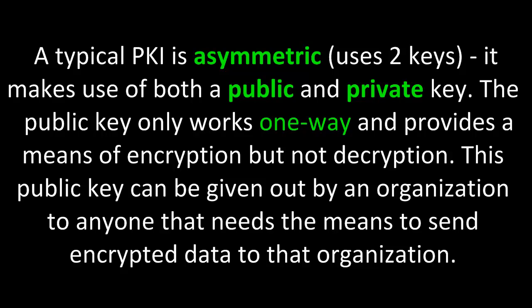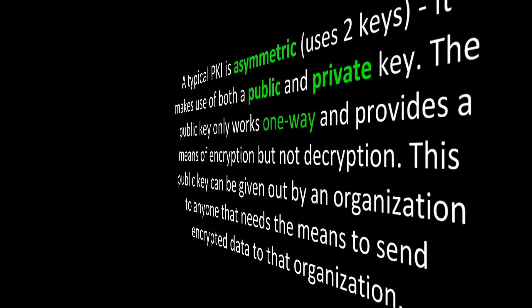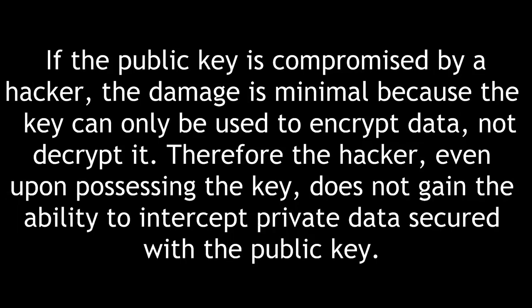A typical PKI is asymmetric — that is, it uses two keys: both a public and private key. The public key only works one way and provides a means of encryption, but not decryption. This public key can be given out by an organization to anyone that needs the means to send encrypted data to that organization. If the public key is compromised by a hacker, the damage is minimal because the key can only be used to encrypt data, not decrypt it.